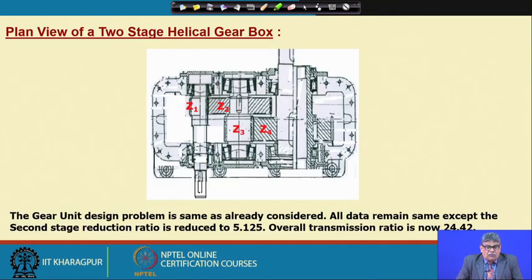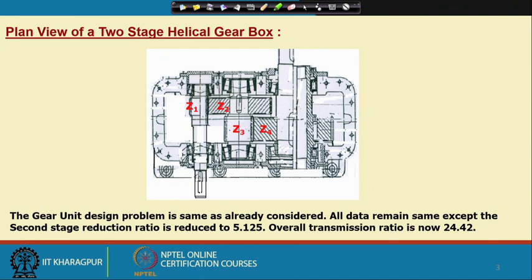The problem we have taken is designing a two-stage helical gear box. This is the plan view — top open plan view of the gear box. Z1, Z2, Z3, Z4 are the teeth numbers. In the first stage, the pinion teeth number is Z1 and the mating gear teeth number is Z2. In the second stage, the pinion teeth number is Z3 and the final output through the mating gear is Z4.